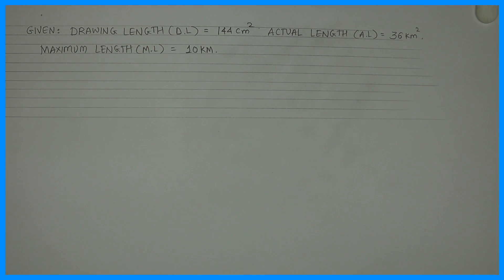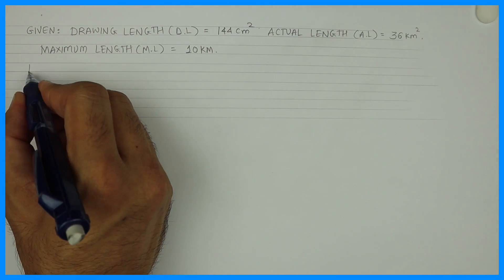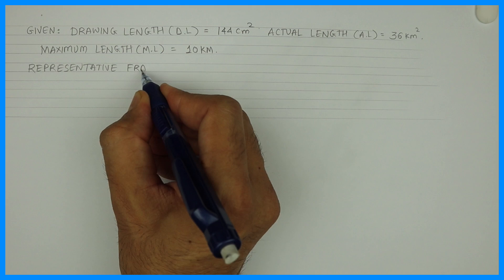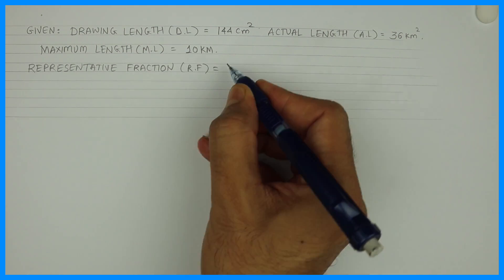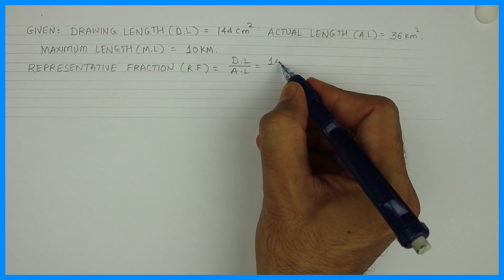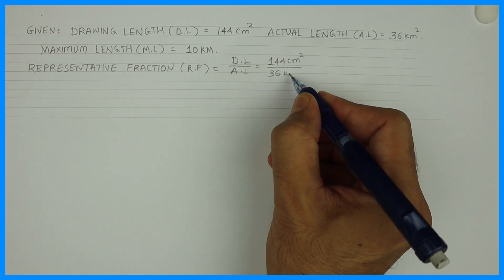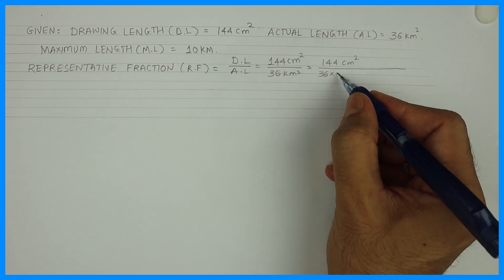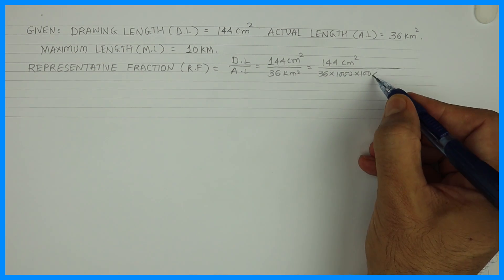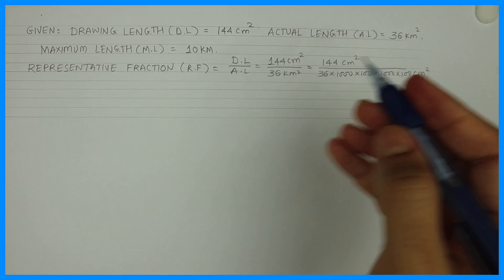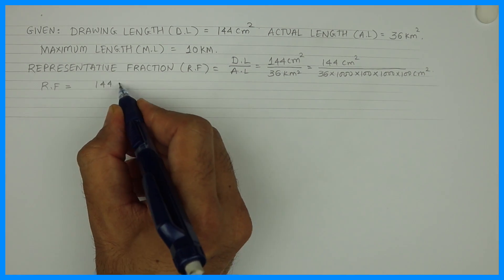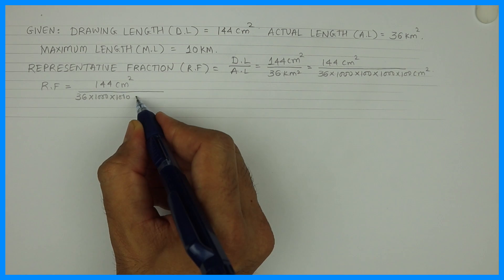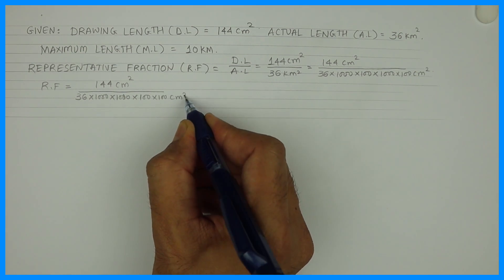Now we'll find out RF. We know representative fraction is equal to drawing length upon actual length. So drawing length is 144 centimeter square and actual length is 36 kilometer square. Converting, that is 36 into thousand into hundred — and it is square so we need to do it twice. So RF is 144 centimeter square upon 36 into thousand into thousand into hundred into hundred centimeter square.